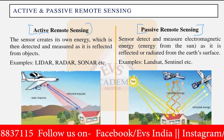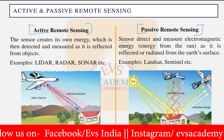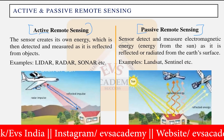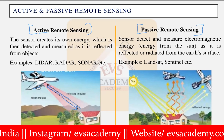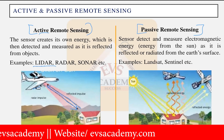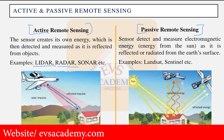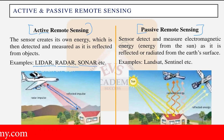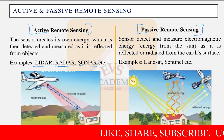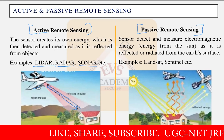Examples of active remote sensing include RADAR — Radio Detection and Ranging — and SONAR, which uses sound wave detection and ranging. These are the main types of active remote sensing found in the real world.